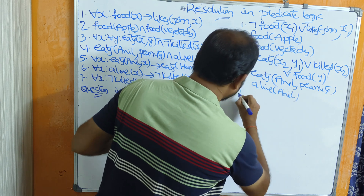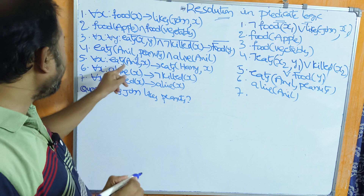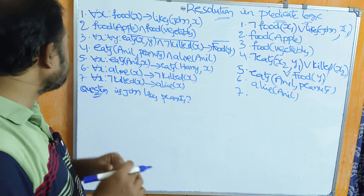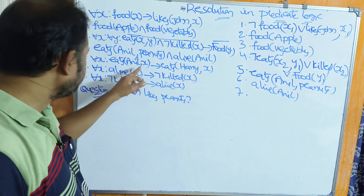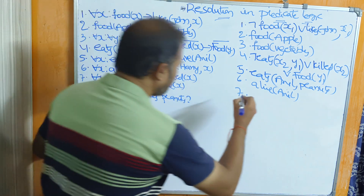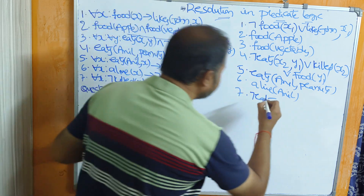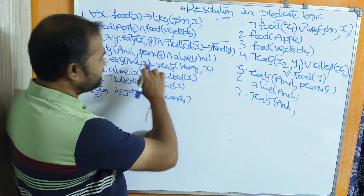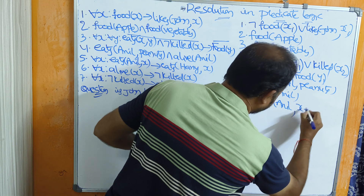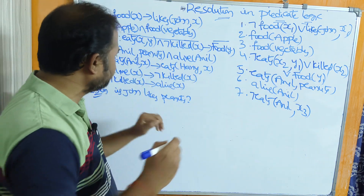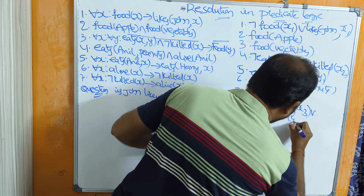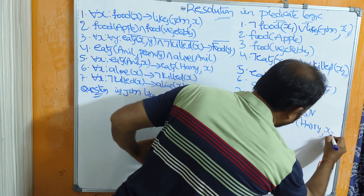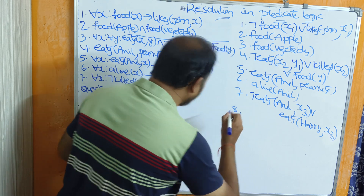Next statement: for all x, eats(anil, x) implies eats(harry, x). Universal quantifier, so directly eliminate it. This is in the form p implies q, so the formula is negation(p) or q: negation eats(anil, x3) or eats(harry, x3). We use x3 because variables must be unique and different.